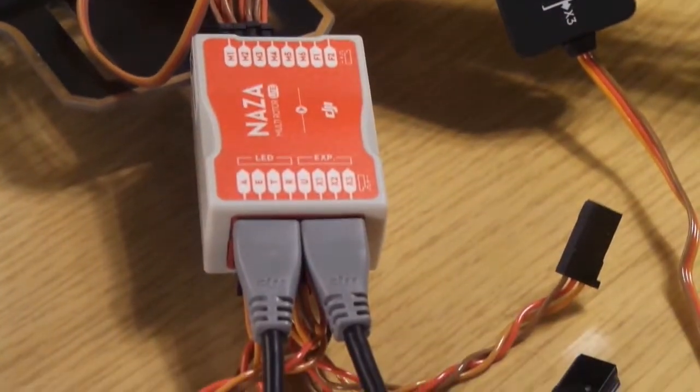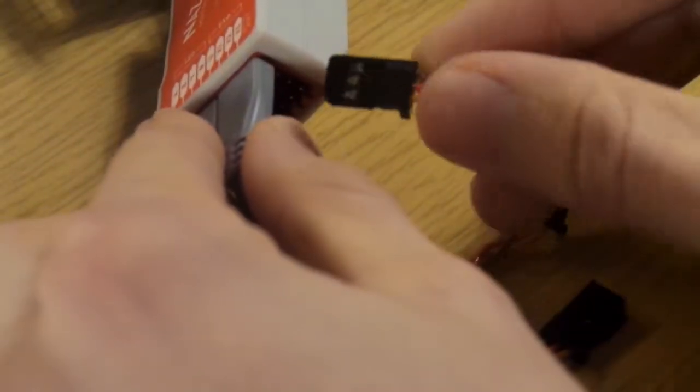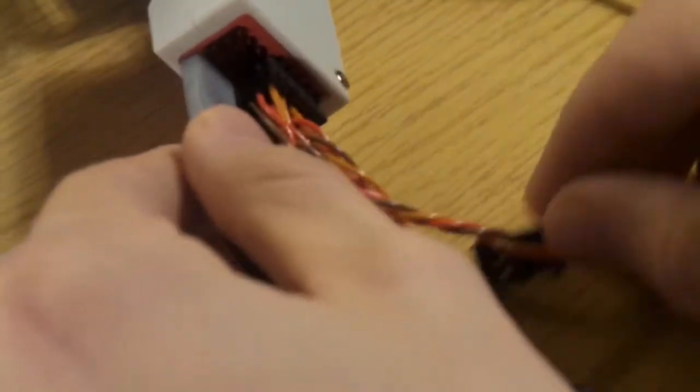Now we have to attach the power unit of the NASA M flight controller and we put the cable into the last place onto this side.